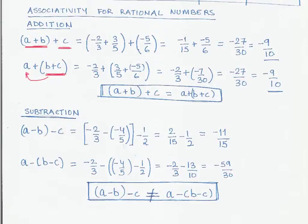So now the three numbers that I have taken: A is minus two by three. We are adding B is three by five. So this is A plus B. And then plus we add it by minus five by six. So when I solve this bracket first, that is minus two by three plus three by five.